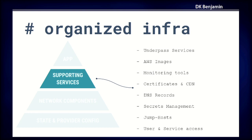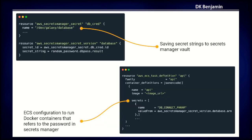We also have to build all the supporting services. Galaxy relies on our Underpass server — the file processing server for all the outputs that Galaxy depends on. We have to define the AWS images (AMIs), monitoring tools like Sentry or New Relic, certificates, and DNS records. One thing I'll focus on is secrets management, because we're talking about security, and also jump hosts and user access. We save secrets using AWS Secrets Manager, and they're then referenced later in the actual application in the ECS task definition.